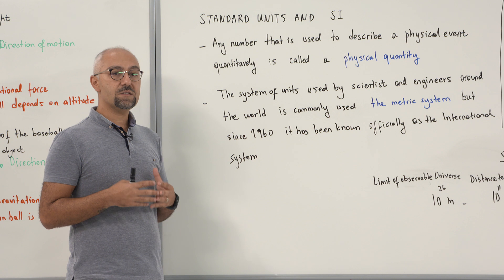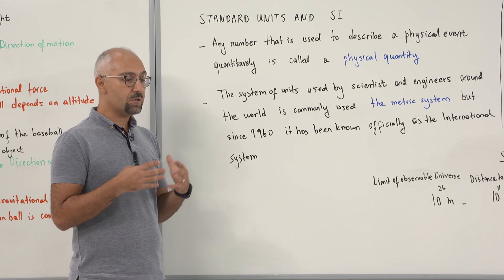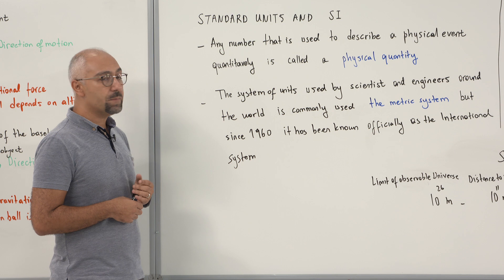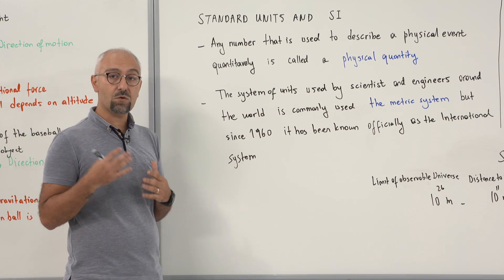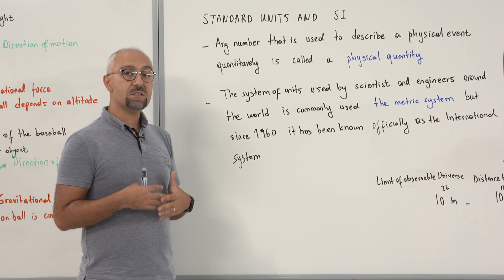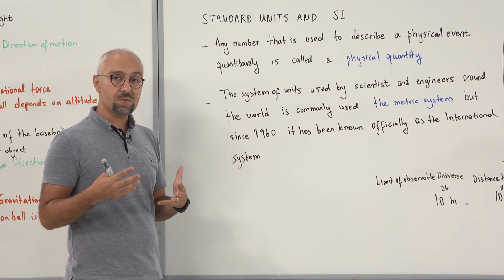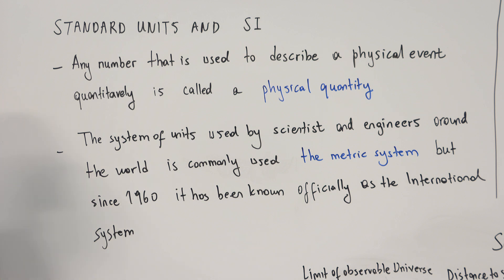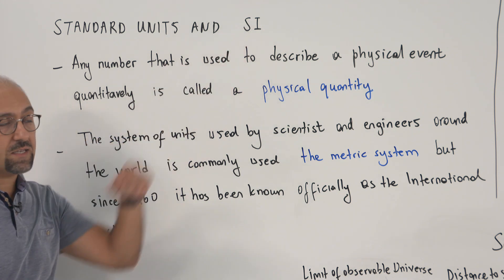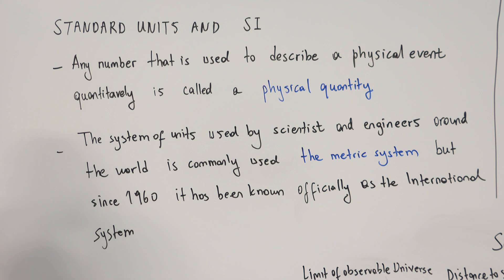Concerning a physics model, we have to define some numbers in terms of our measurements. Any number used to describe a physical event quantitatively is called a physical quantity. We are going to define units and systems that describe an object's behavior in physics. The system of units used by scientists and engineers around the world is commonly called the metric system, but since 1960 it has been known officially as the International System, abbreviated SI — from the French 'Système International'.